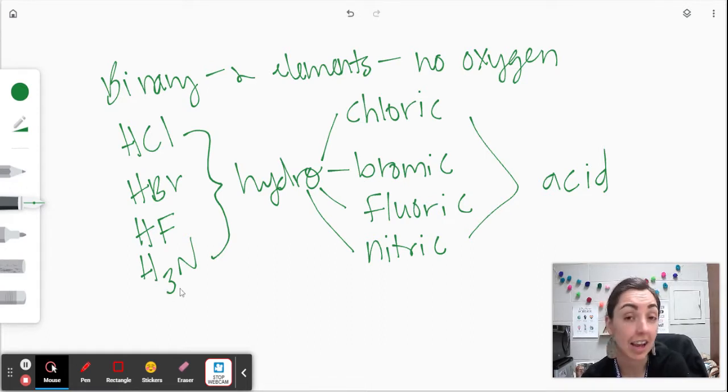Now you can note that this one here is H3N. That's because your nitrogen has a minus three charge and your hydrogen has a plus one charge. So we do need to balance those charges there. So you have hydronitric acid.